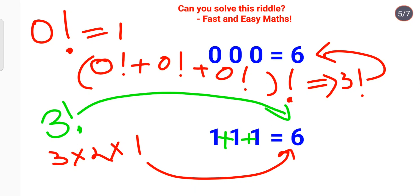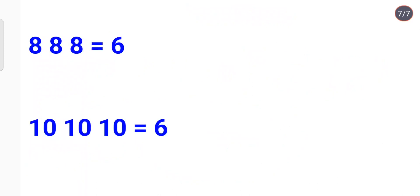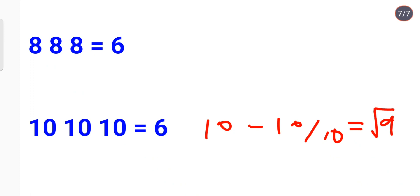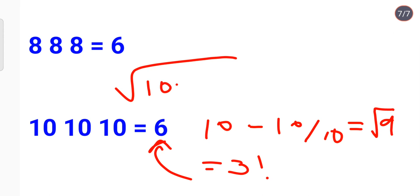Now the last two: 8, 8, 8 and 10, 10, 10 — both to equal 6. These are the ones many students found very difficult. For 10: we can write 10 minus 10 divided by 10, which gives 9. Then take the square root to get 3, and apply factorial to get 6. So the full operation is: factorial of the square root of (10 minus 10 divided by 10).